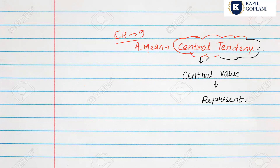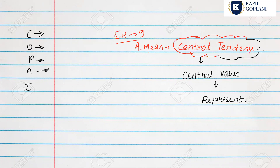To understand why we calculate central tendency, consider the stages of statistics: collection, organization, presentation, analysis, and interpretation. After presentation comes analysis. Median, mode, and mean are your analysis tools. The main purpose is that we will get the averages.